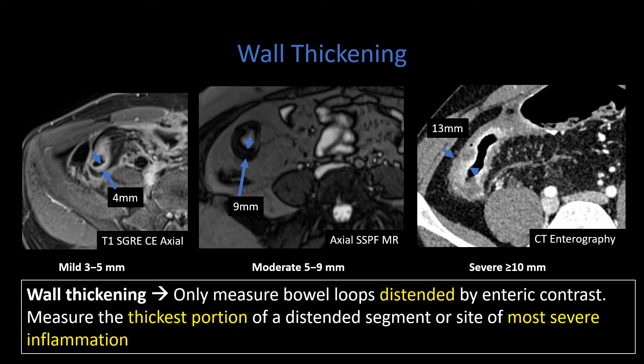When you think about wall thickening, there are different grades — mild, moderate, and severe. When assessing wall thickening, make sure you have adequate distension of that loop of bowel with oral contrast, then measure the most severe area of wall thickening in the area showing distension. We can see here some mild wall thickening at 3 to 5 millimeters, here 9 millimeters, and here 13 millimeters — showing those different grades on MRI and CT.